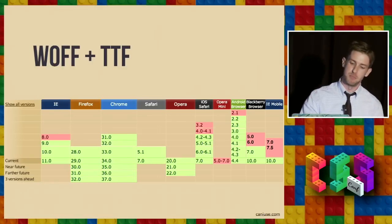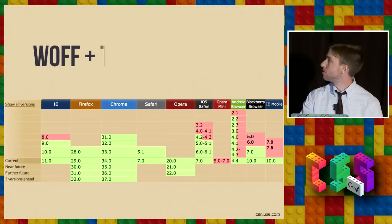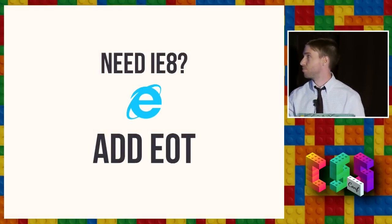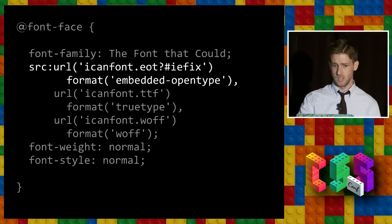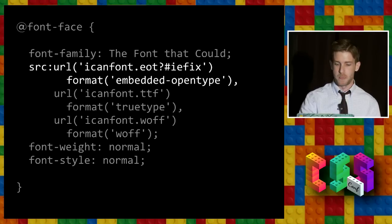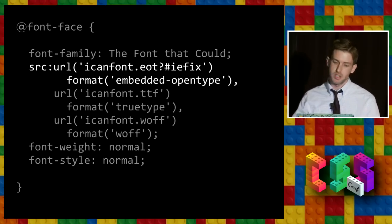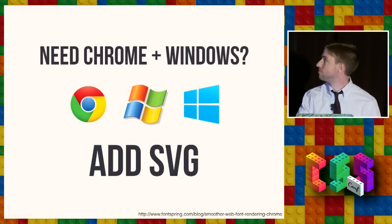Adding TrueType support would be our next step — that gives us a little bit better Android support. And if we need IE8 — this actually works for IE6 plus, but at Filament Group we cut the mustard for IE8 plus, so this presentation is tailored for that — we want to add the Embedded OpenType format. There's a URL parsing problem in Internet Explorer, so you want to include this question mark pound IE fix to make it parse the URL correctly. When you add Embedded OpenType, you get IE8.